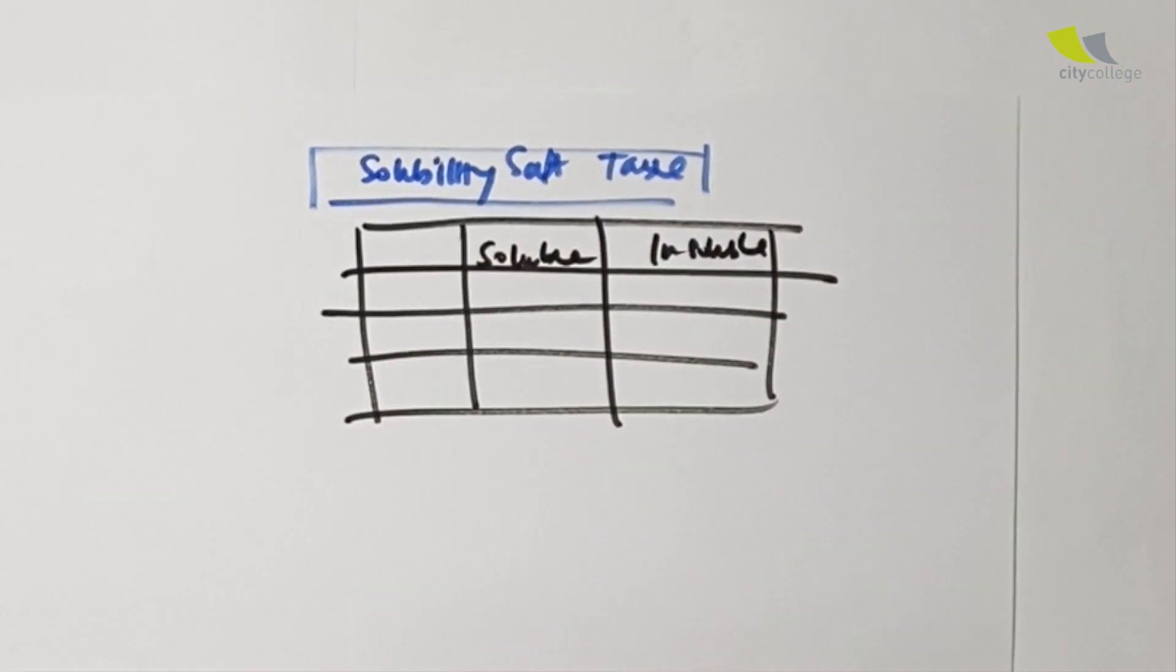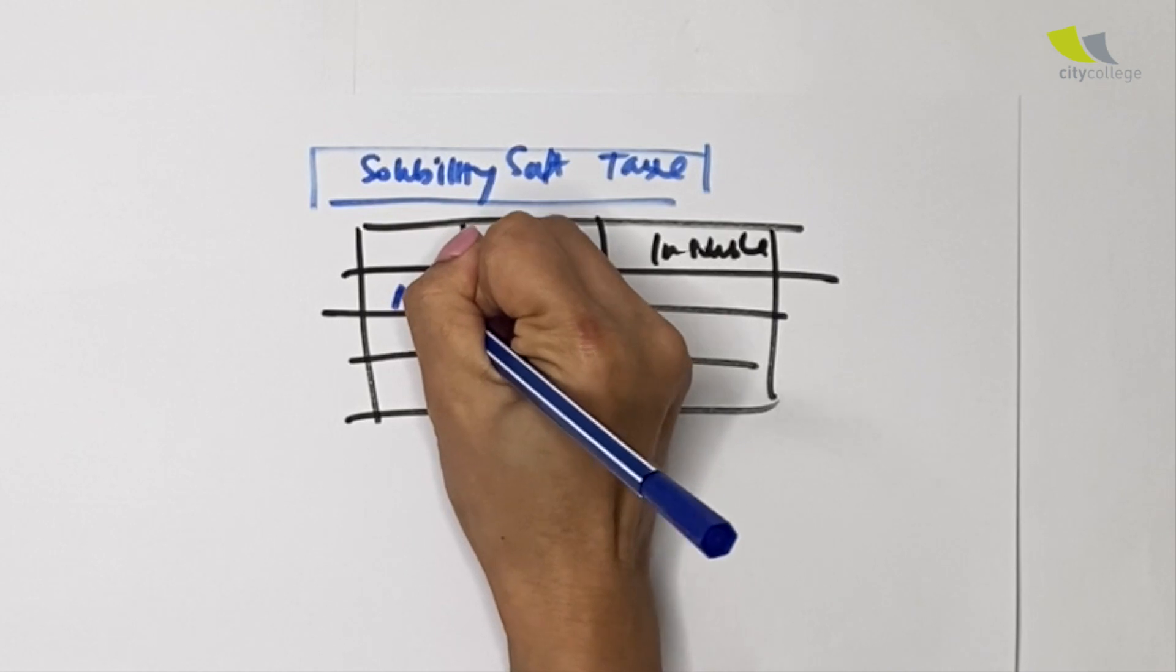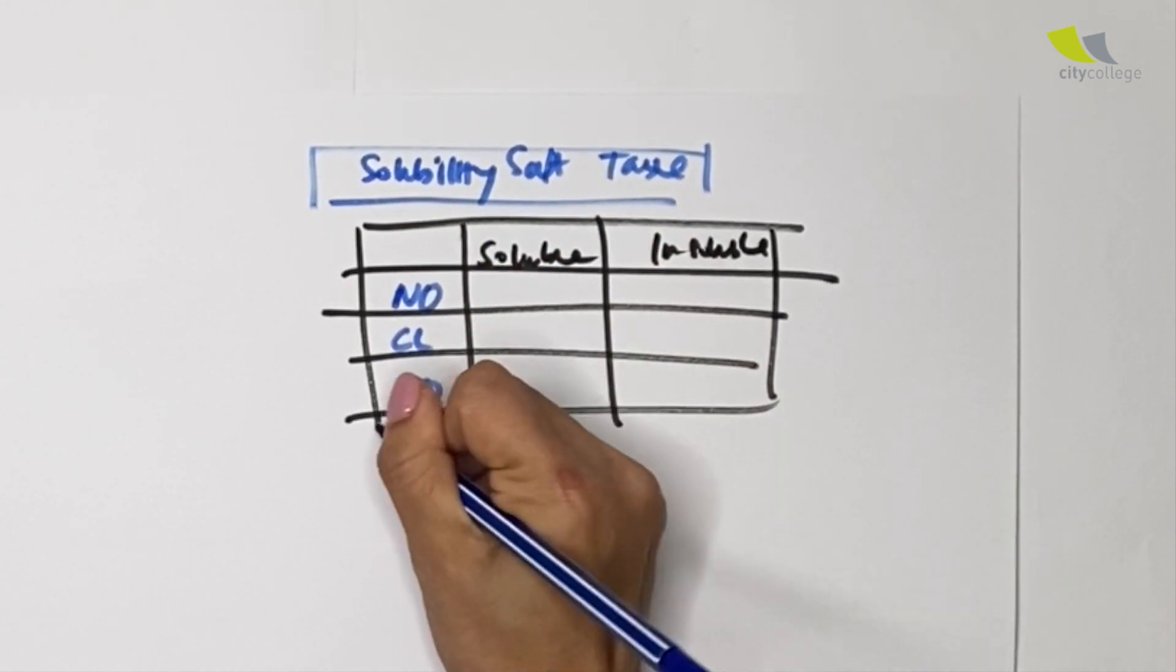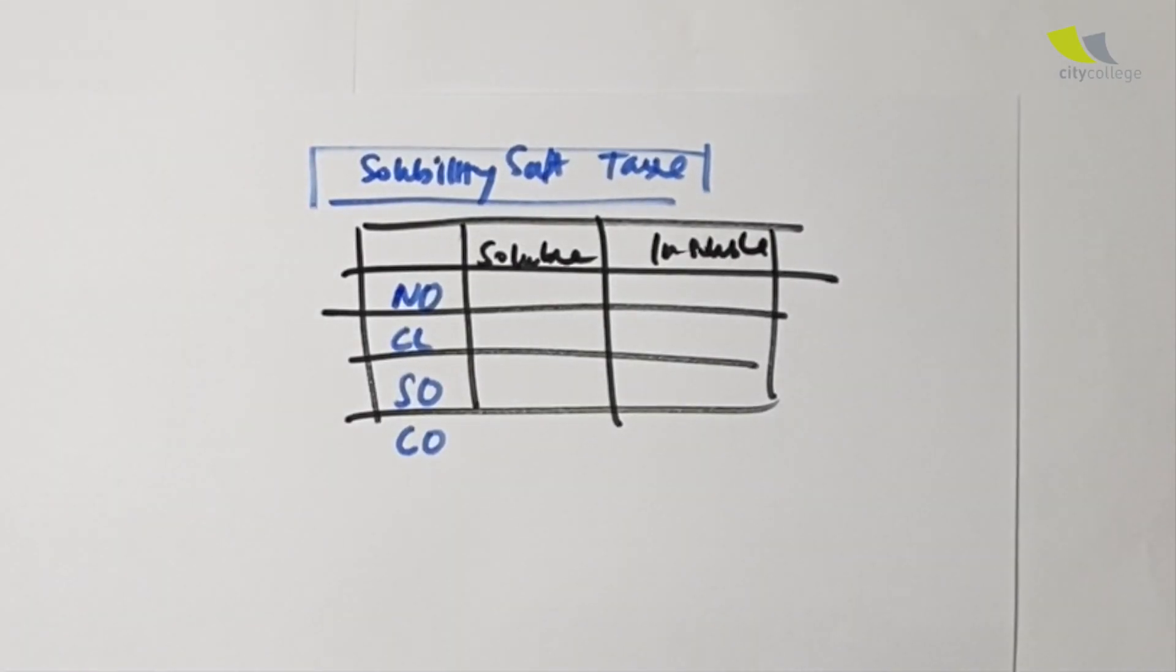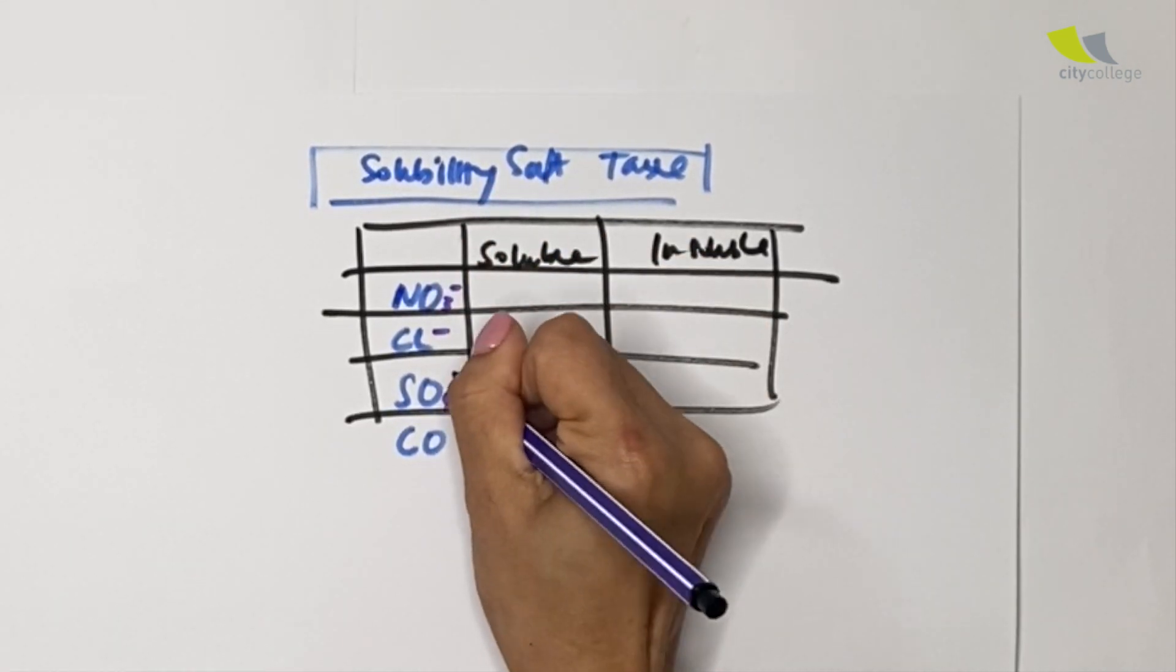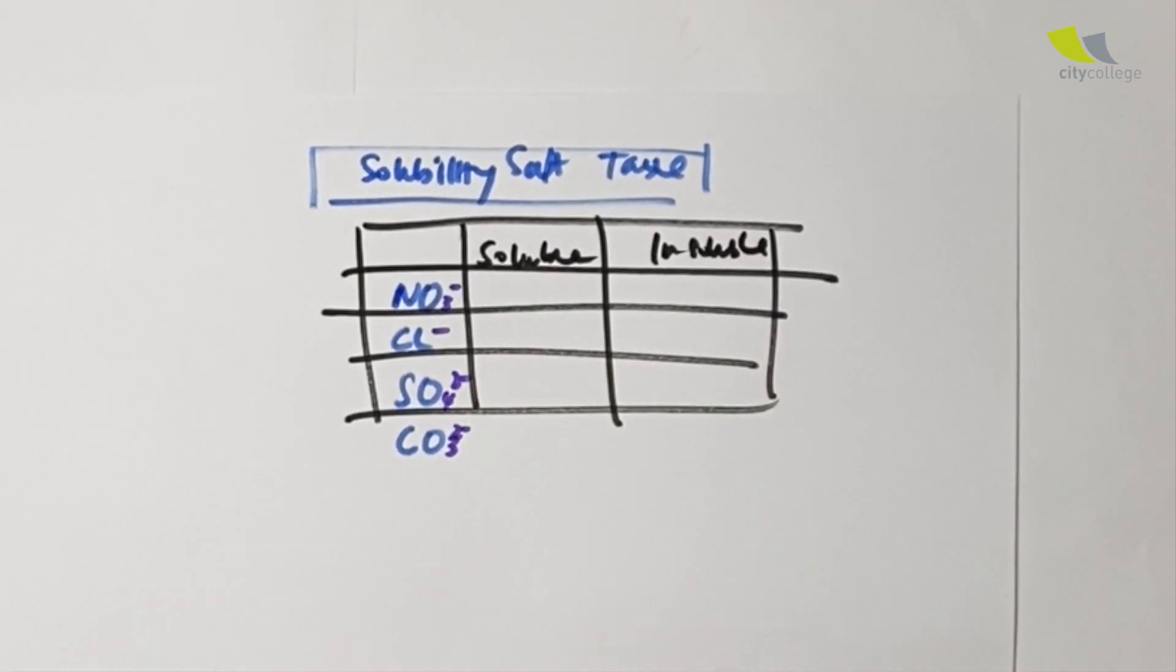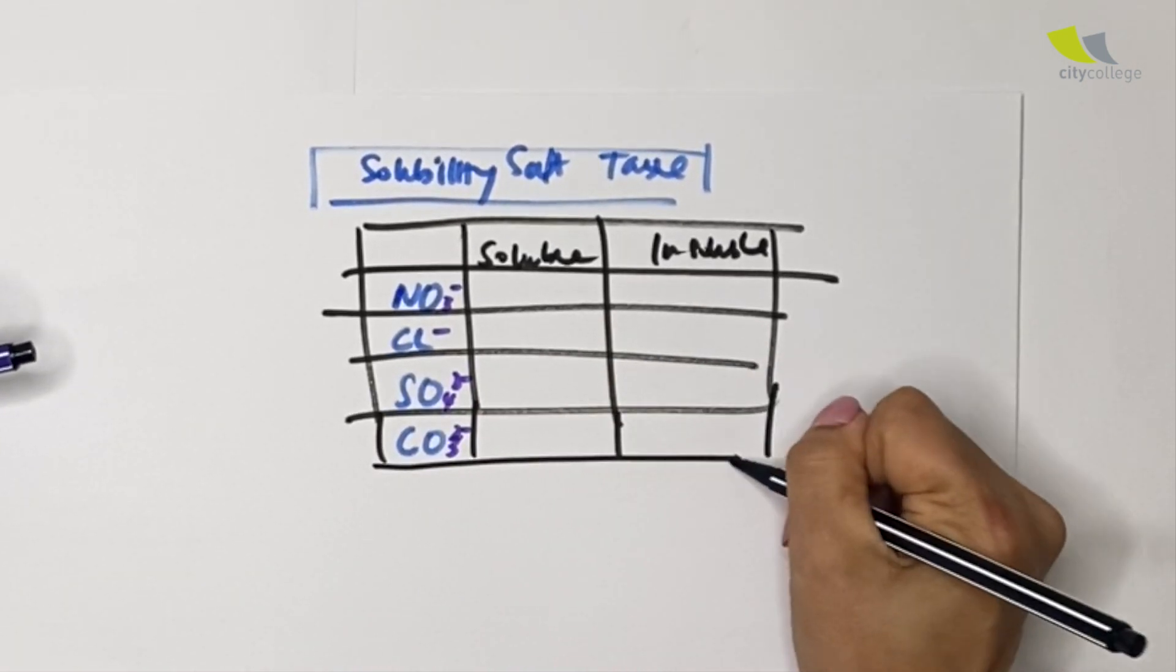Another acronym that I want you to remember is NO CLSO SO COLD. What do you mean by NO CLSO SO COLD? Well, this will help you with the nitrate, chloride, sulfate, and carbonate. NO CLSO SO COLD, isn't it cold right now?